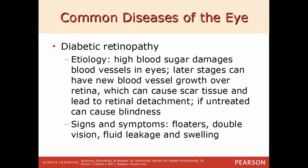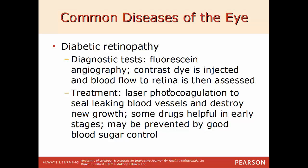Diabetic retinopathy: very high blood sugar damages the blood vessels in the eye. In later stages, new blood vessel growth over the retina causes scarring, leading to retinal detachment and blindness if untreated. Signs include seeing floaters — which are common in small amounts but become serious when excessive — double vision, swelling, and fluid leakage. Diagnosed by fluorescein angiography, where a contrast dye is injected into the blood flow in the retina to see which vessels are obstructed and whether the retina is becoming detached. Treatment includes laser photocoagulation to seal leaking vessels and destroy new growth, and managing blood sugar levels.